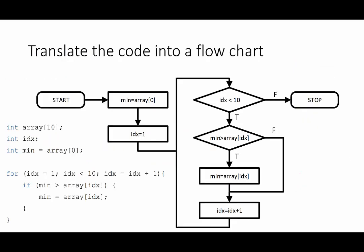One way to help visualize how you might convert this code into a finite state machine is to create a flowchart and search the flowchart for any times that we store a value. Any time we store a value indicates that we may need a new state, because storing always happens on a clock edge. In this example, once the code starts we initialize our value for min, set our index to the beginning of the array, and then we traverse the array replacing the minimum value if we ever find a value smaller than the original minimum value.